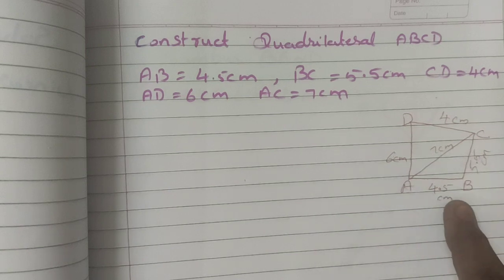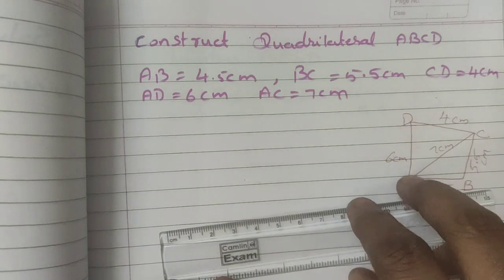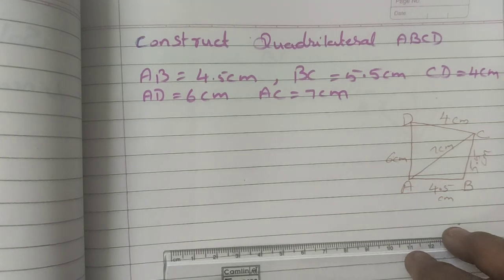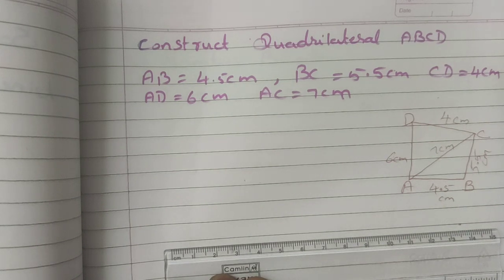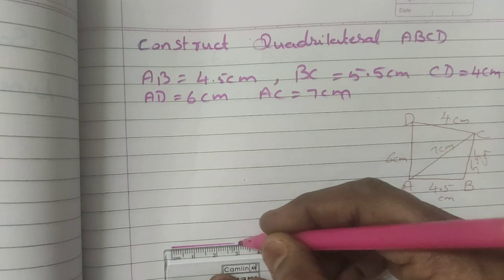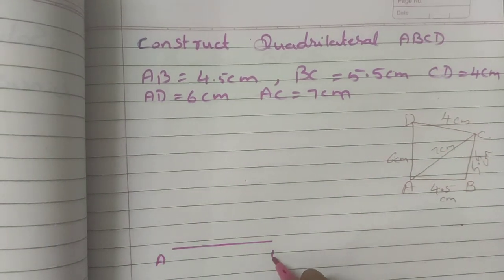With the help of the rough sketch, we are going to construct the given measurement. So first let me take AB, 4.5 cm. So let me take AB is equal to 4.5 cm. Mark it as A and B.